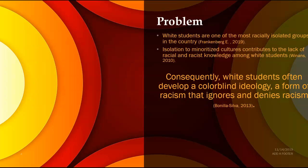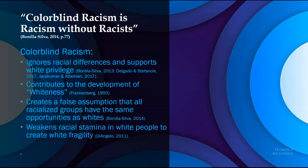The problem this study will look at is the fact that white students are among the most racially isolated groups in the country. This isolation contributes to the lack of racial and racist knowledge among white students, and they often develop white or colorblind ideology — a form of racism that ignores and denies racism — although this ideology is also nurtured and developed in the social studies classroom. Colorblind racism ignores racial differences and supports white privilege, creates the false assumption that all racialized groups have the same opportunities as whites, and weakens racial resiliency in white people, creating the condition known as white fragility.